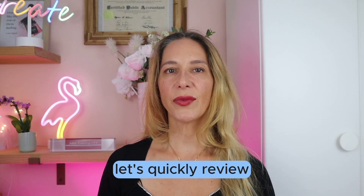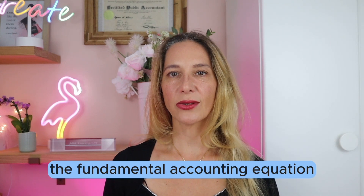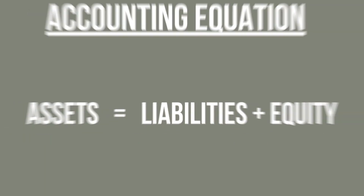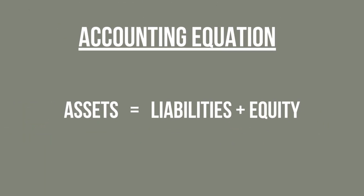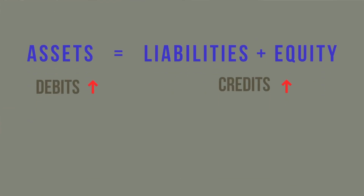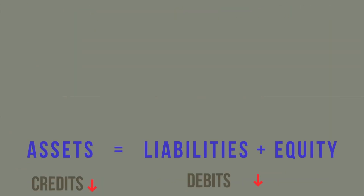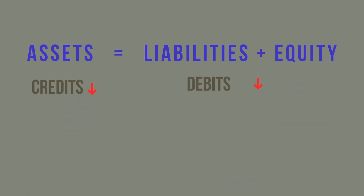First, let's quickly review the fundamental accounting equation: Assets equals liabilities plus equity. This equation must always remain in balance after recording any transaction. When an asset increases, either a liability or equity must increase by the same amount. Conversely, when an asset decreases, either a liability or equity must decrease.